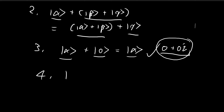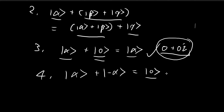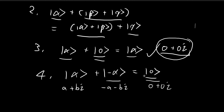The fourth axiom is that for any given vector alpha, there must exist an associated inverse vector such that adding them gives the null vector. For complex numbers, the inverse of a + bi is −a − bi, which is also a complex number and thus inside the set. Adding them gives 0 + 0i, the null vector. So the fourth axiom is also satisfied for complex numbers.